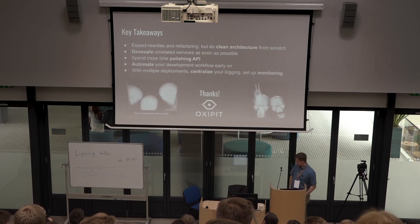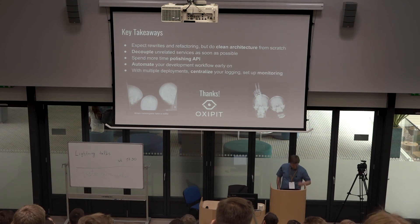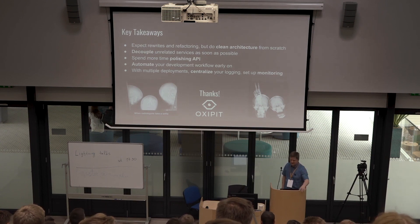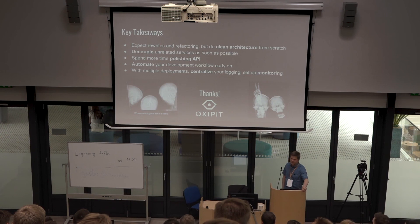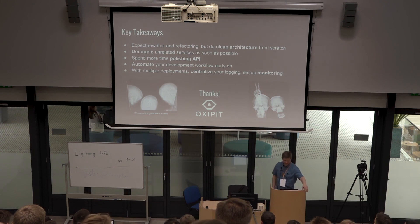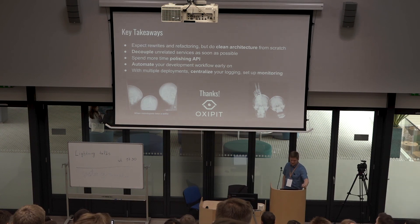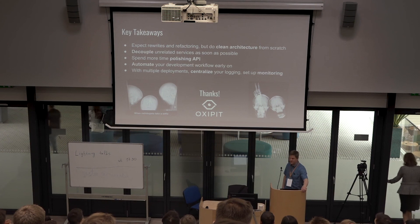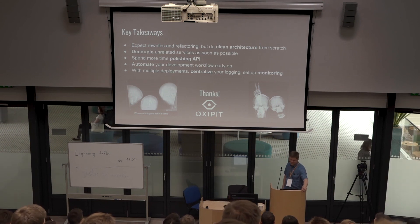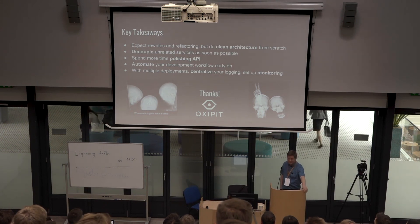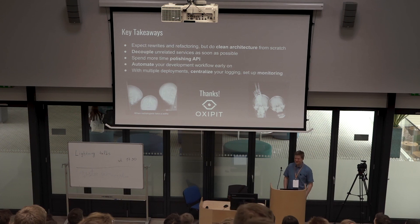So the key takeaways: you should really learn about clean architecture and try to do it from scratch. Try not to mix your machine learning API with unrelated services like reporting or authorization. Spend more time polishing your API, because you'll be stuck with it for a long time. Automate the development workflow. And when you have multiple deployments, centralize your logging and monitor. Thanks — I'm Matas. Do you have any questions?